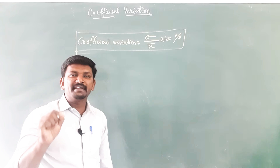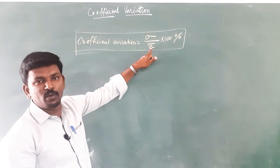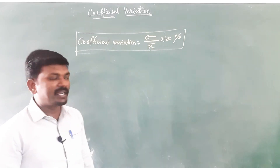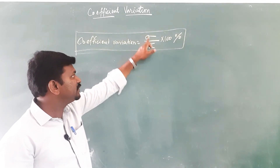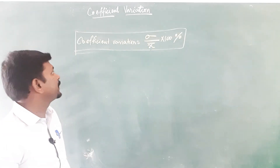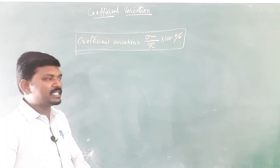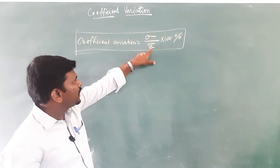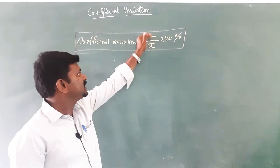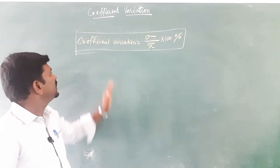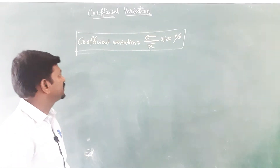If you want to find the coefficient of variation of a data, first we have to find the mean, then we have to find the standard deviation, then divide and multiply by 100. In some questions, if it is a simple problem, they will give you the mean and the standard deviation directly — just divide and multiply by 100. The coefficient of variation is generally denoted by CV.